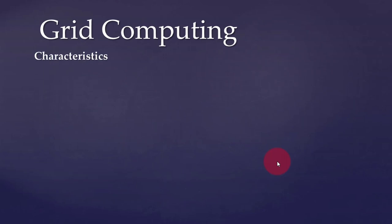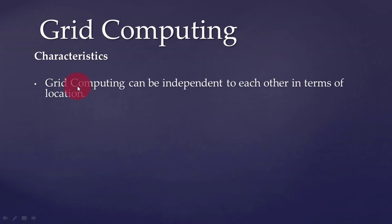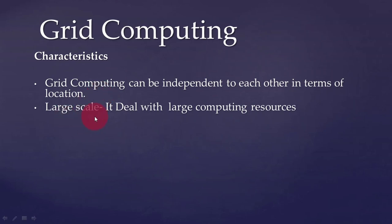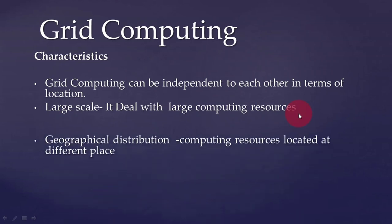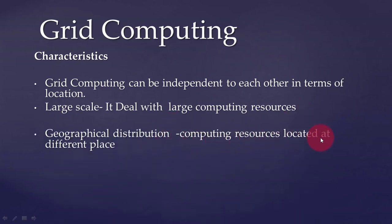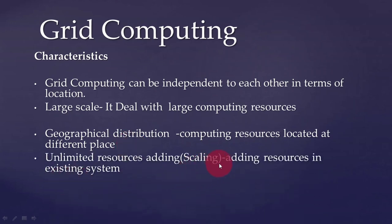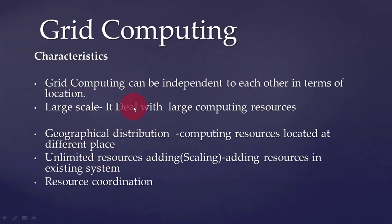The characteristics of grid computing include: independence — each node is independent in terms of location; large scale — it deals with large computing resources; geographical distribution — computing resources located at different places; unlimited resources and scaling — adding resources to the existing system; and resource coordination.